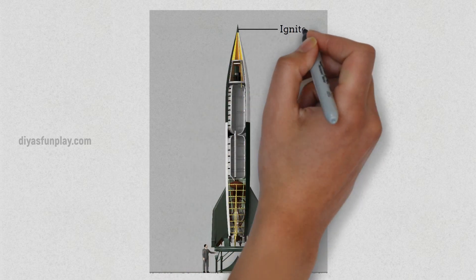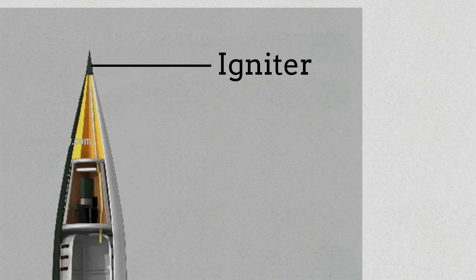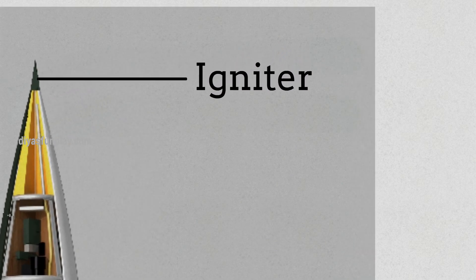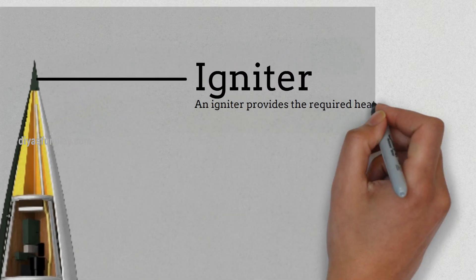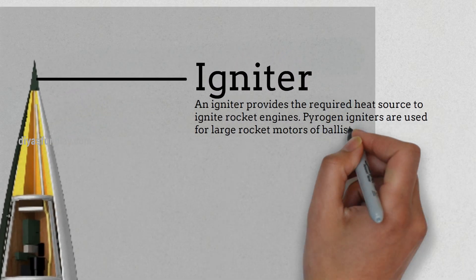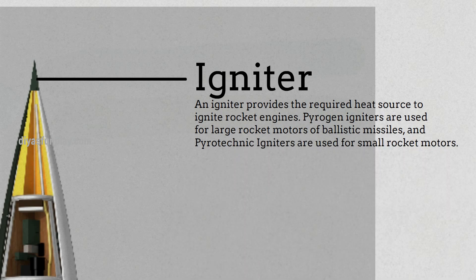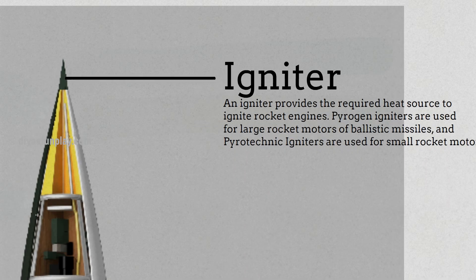Igniter. An igniter provides the required heat source to ignite rocket engines. Pyrogen igniters are used for large rocket motors of ballistic missiles, and pyrotechnic igniters are used for small rocket motors.